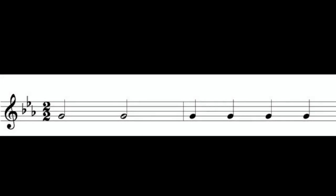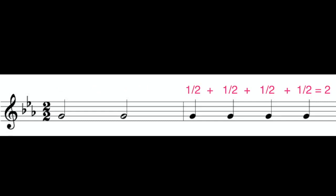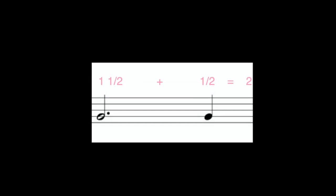In the next example, let's go over the two two or cut time. We have two half notes. Since the bottom number is a two, the half note gets one beat, so here we have two beats. The next example is four quarter notes — each quarter note is now getting half a beat, so half plus half plus half plus half equals two. Next, we have a dotted half which gets a beat and a half, and the quarter note now gets half a beat — one and a half plus a half equals two.